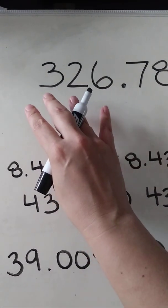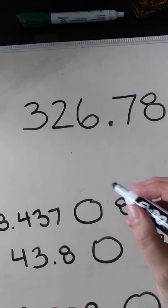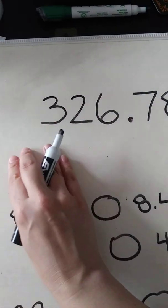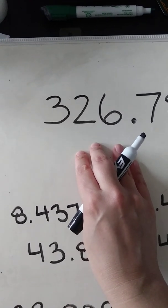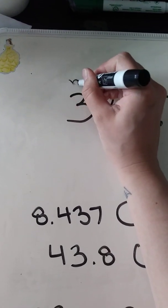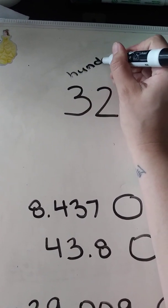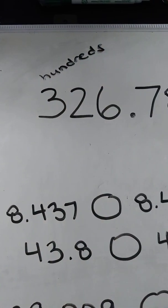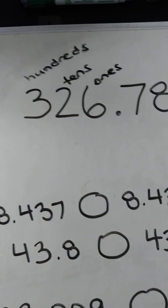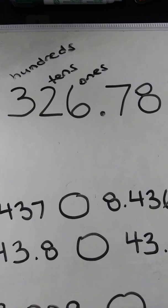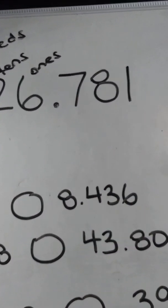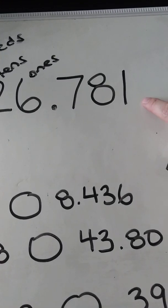Now let's go through the place value of the decimals. Of course, I know the regular place value of the whole number side, so I can start over here. This is my hundreds place, my tens, and ones — or units, depending how your teacher describes it. And then over here on the other side of the decimal we have our parts.